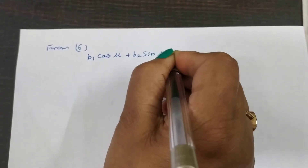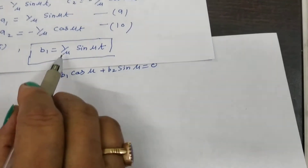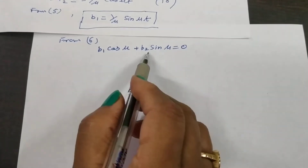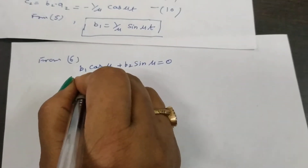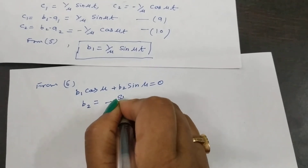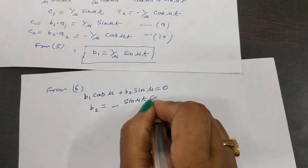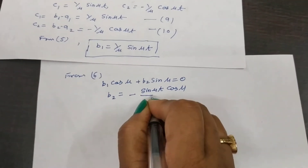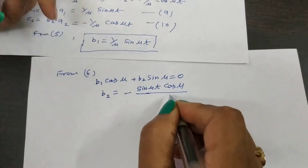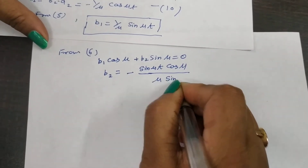Here sin(μ) is equal to 0 and b1 is equal to (1/μ)sin(μt). From b1 you can find b2. So b2 is equal to minus of sin(μt) cos(μ) divided by μ sin(μ).